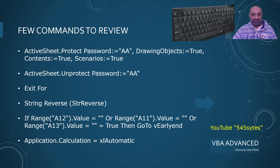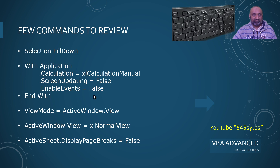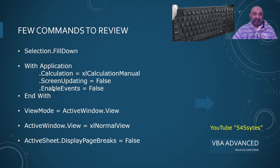The next one is very simple: application.calculation is equal to xlAutomatic or xlManual. This is to control the manual and automatic calculation setting of Microsoft Excel. The next command is selection.filldown — just as we do filling in an Excel cell. This is the command used in VBA to fill down a cell.